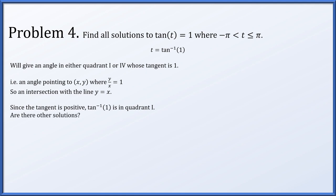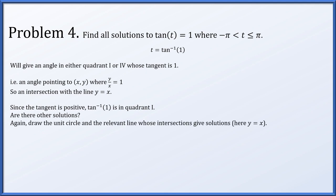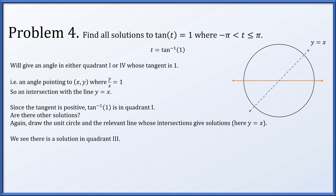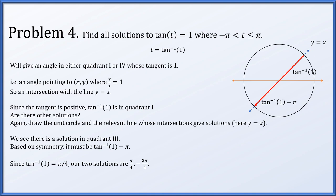Drawing the line y equals x on the unit circle, there is also a quadrant 3 intersection. By symmetry, adding or subtracting pi radians from the quadrant 1 solution points in the opposite direction. Since t can't exceed pi, we subtract pi: arc tangent of 1 minus pi is the quadrant 3 solution. Since arc tangent of 1 equals pi over 4, our two solutions are pi over 4 and minus 3 pi over 4.